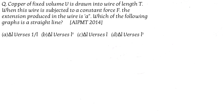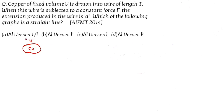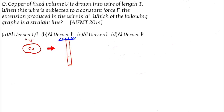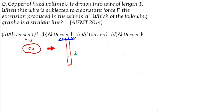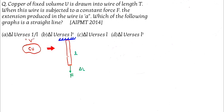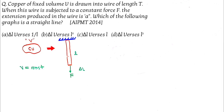In the next question, copper of fixed volume V is drawn into a wire of length l. When the wire is subjected to a constant force F, the extension produced is delta l. Which of the following graphs is going to be a straight line? Suppose it is copper with fixed volume V, length l, and the extension is delta l.